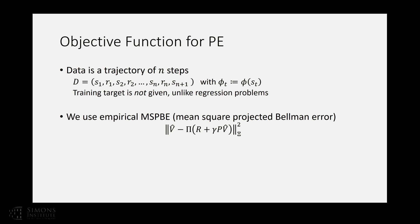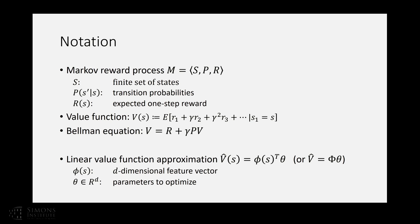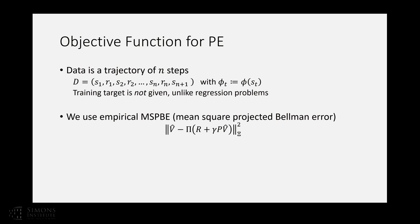The most popular objective is called mean square projected Bellman error, motivated by the Bellman equation. The true V function is the fixed point of the Bellman operator: apply the operator to any function V and you get a new function, and the true V is the fixed point. For linear function approximation, we apply the Bellman operator to our approximated value function, project the result back into the linear feature space, and want the projected value function to equal what we started with — a different kind of fixed-point solution.